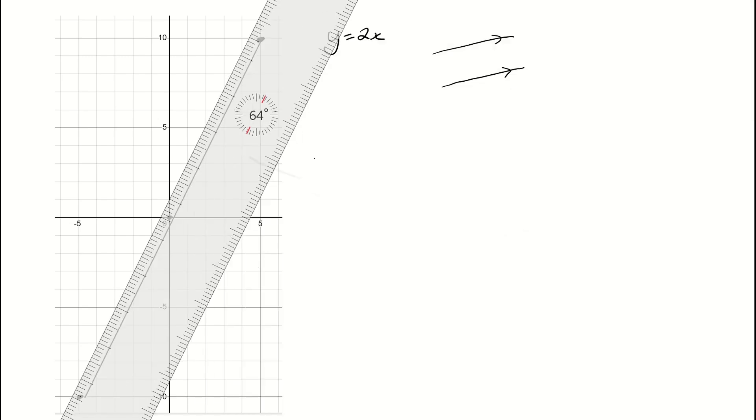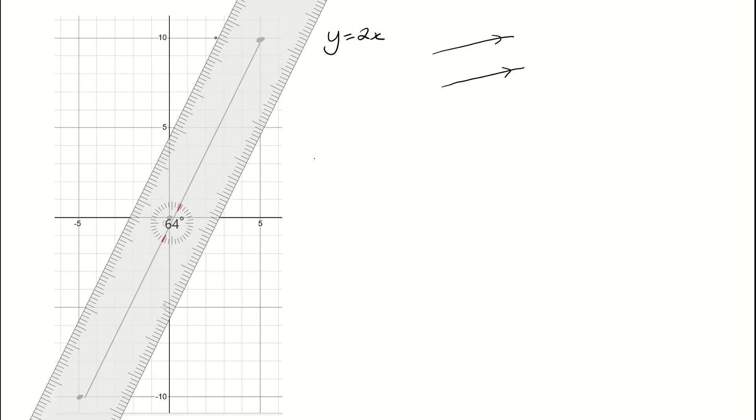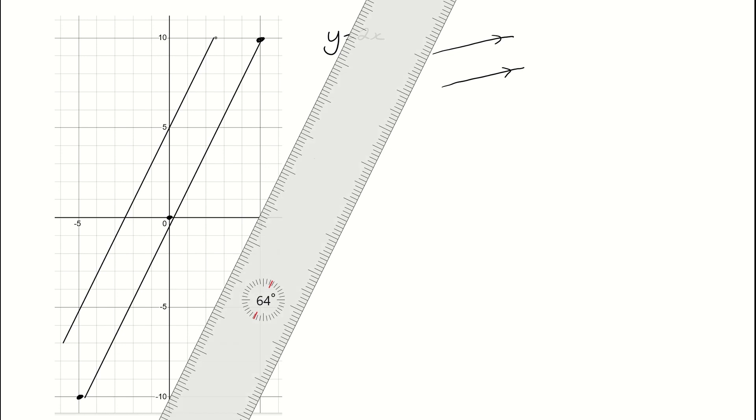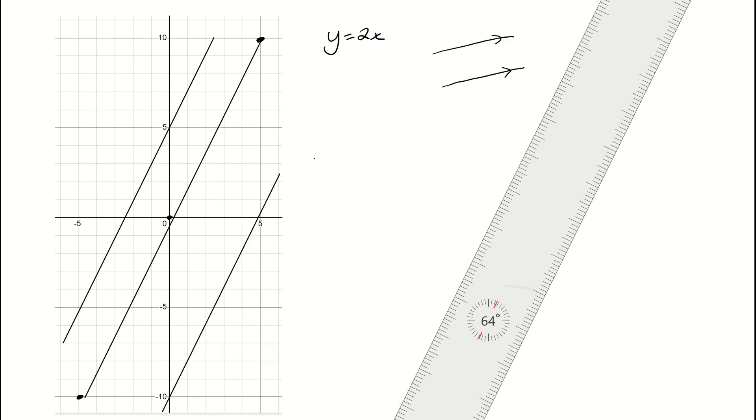So for example, this line here would be parallel. So we could get, I'll just pop that ruler in. That line there would be a parallel line or maybe this line down here would be a parallel line.